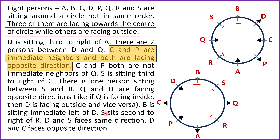S sits second to the right of R. We don't know the directions of S and R yet in either case. In Case 1, this is only possible when R is facing outside the center — so in Case 1, R is facing outside. In Case 2, looking at the positions of R and S, if R is facing towards the center then S will be second to the right of R — so in Case 2, R faces inside the center.